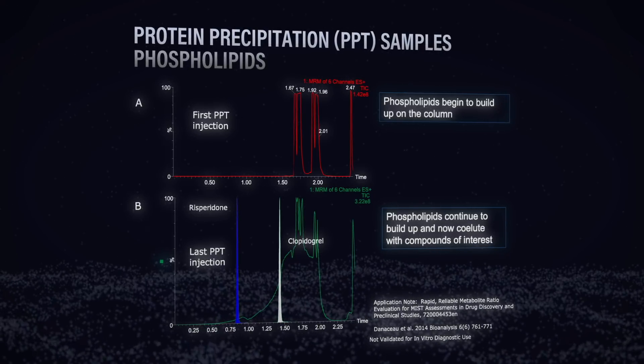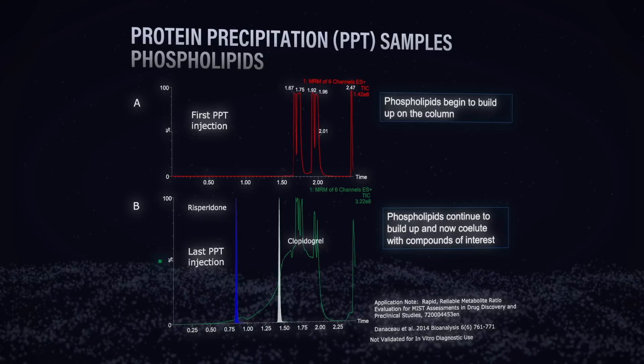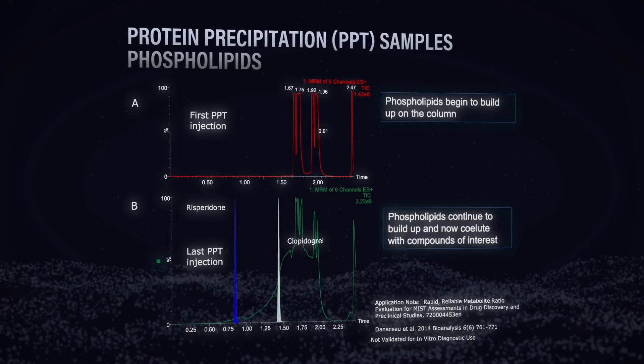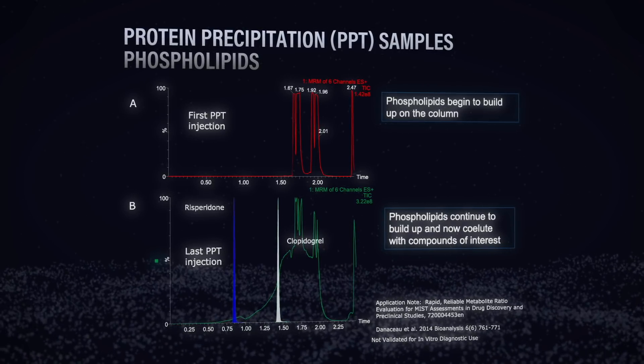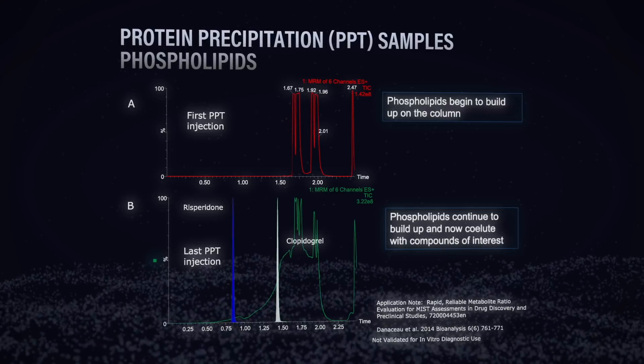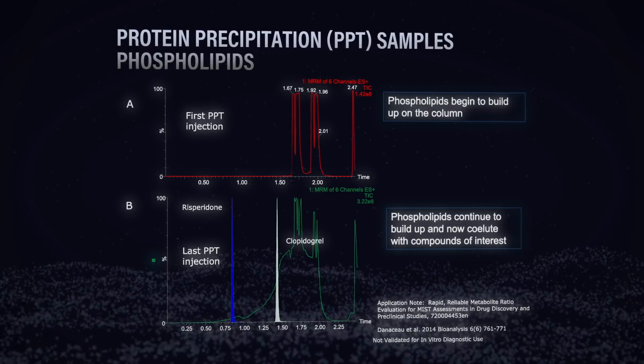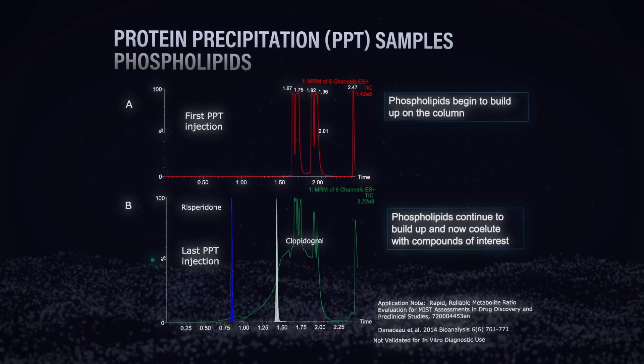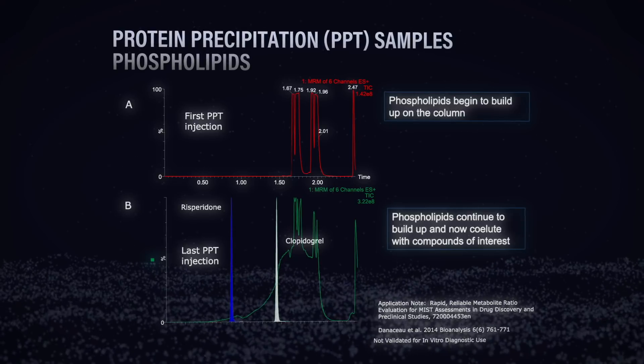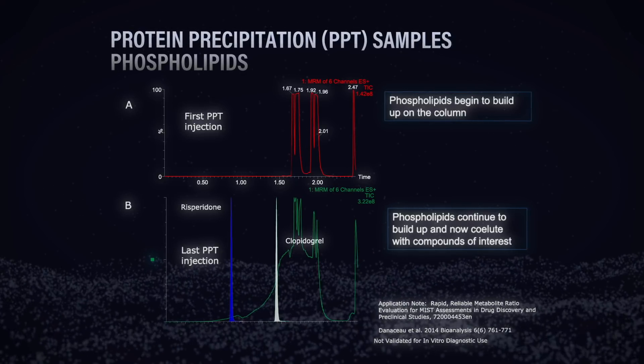So protein precipitation just isn't good enough to clean up these biological samples. Unfortunately it's not — it's easy, and sometimes we scientists like to do the easiest thing, but in this case it's really not getting us where we need to go. I think we have to call it busted, because protein precipitation really isn't enough to ensure good, reproducible quantification.